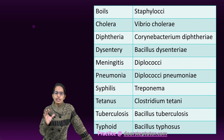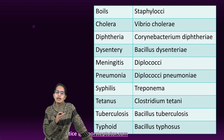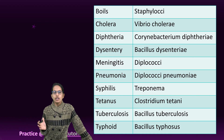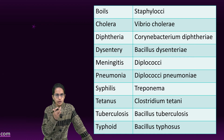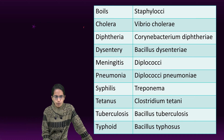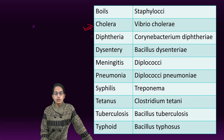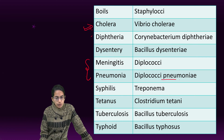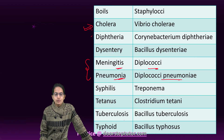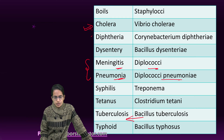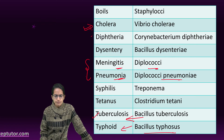Here is a list of diseases and the bacteria that cause them: Staphylococci causes boils; Vibrio cholerae causes cholera. Diplococci pneumoniae causes pneumonia, and Diplococci causes meningitis. Bacillus tuberculosis causes tuberculosis and Bacillus typhosis causes typhoid. Which bacteria causes which infection is very important to remember.